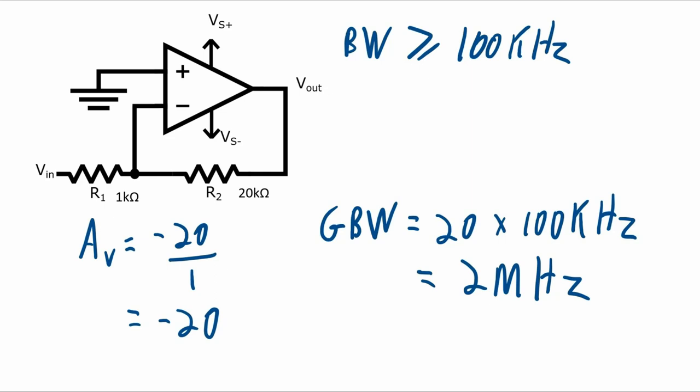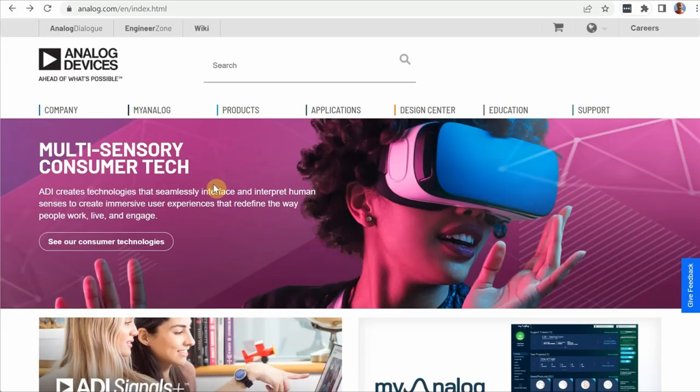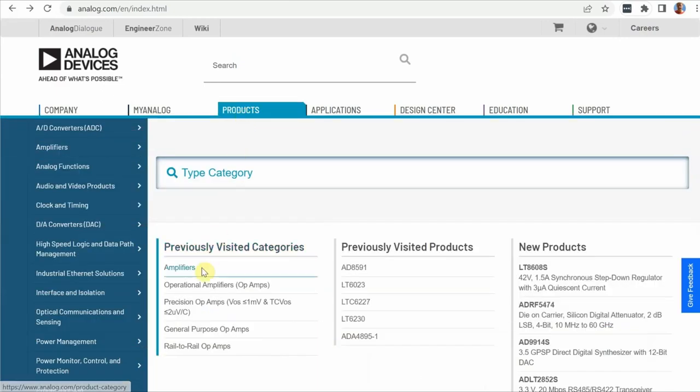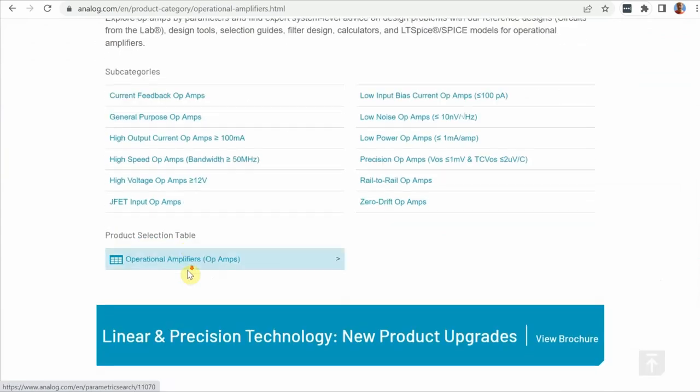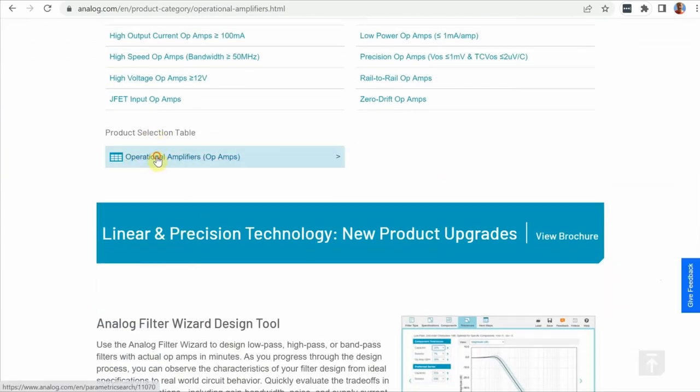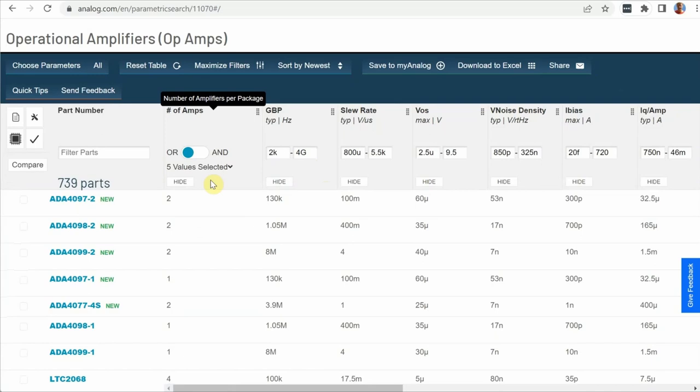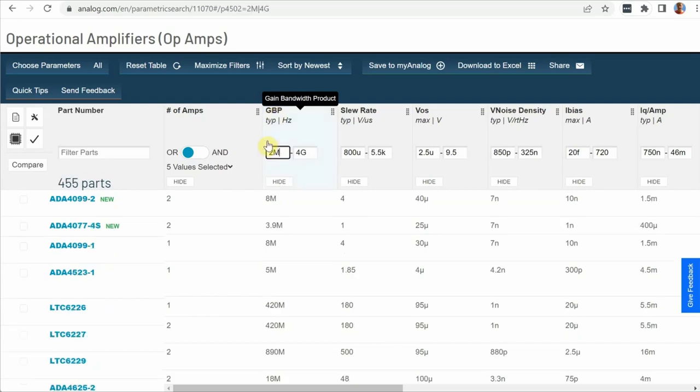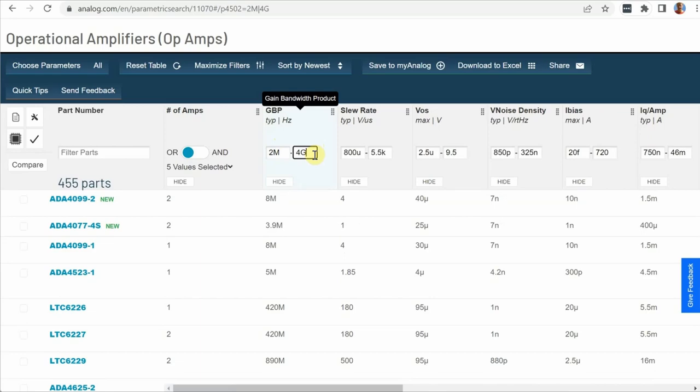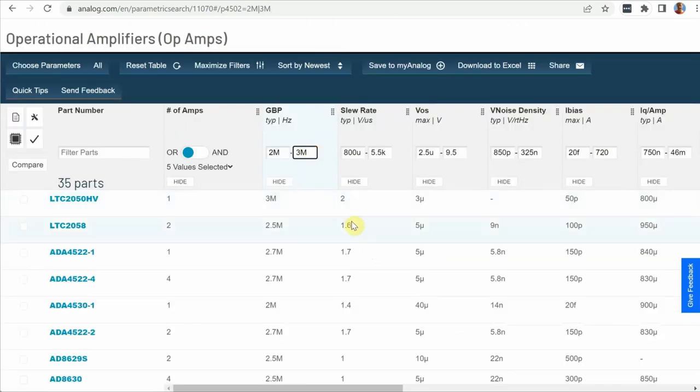So we need an op amp with a gain bandwidth product at least 2 megahertz. So that LM358B from the previous slide will not work since its gain bandwidth was only 1.2 megahertz. So what I can do then is go to the website of an op amp provider. I'm just going to pick analog devices because I use Texas Instruments for the last example. Go to their main page here, and then I'm going to go into products. I'm going to go into op amps. I'm going to scroll down here to this product selection table. And when I go into this product selection table, this is basically a parametric search. And I can search based on whatever parameters I want. And what I want is the gain bandwidth product. I need something more than 2 megahertz. I don't need it to be that much more than 2 megahertz. So I can go something like from 2 to 3 megahertz.